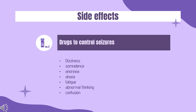Side Effects. Dizziness, somnolence, anorexia, ataxia, fatigue, abnormal thinking, and confusion are common side effects of zonisamide use. Zonisamide can also cause mild to moderate weight loss.